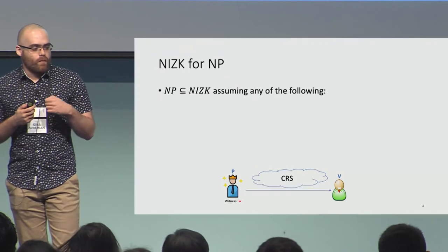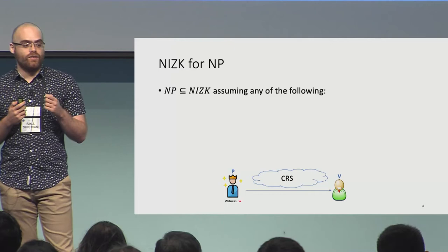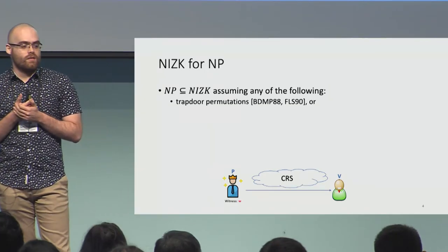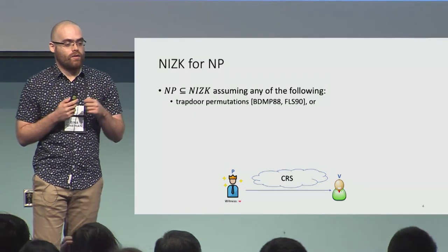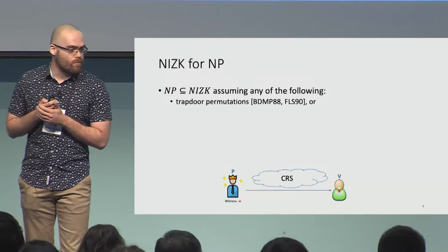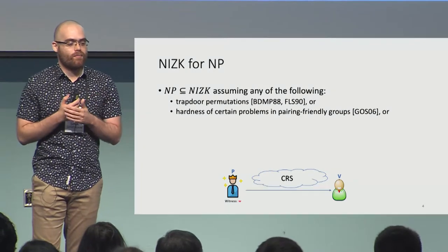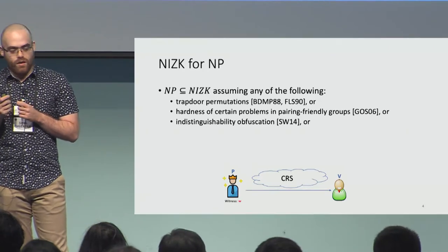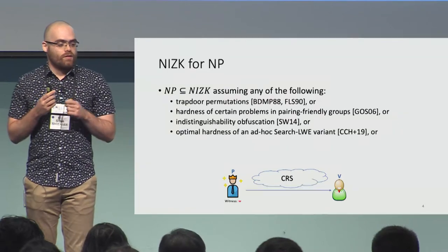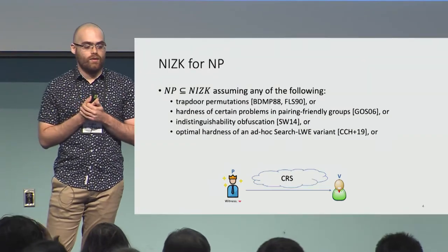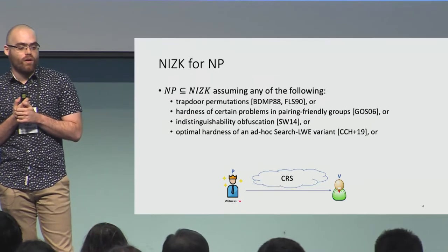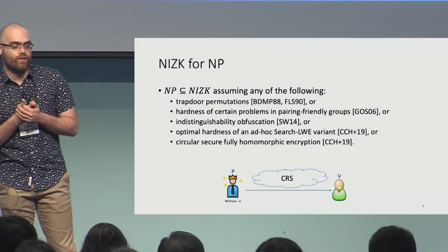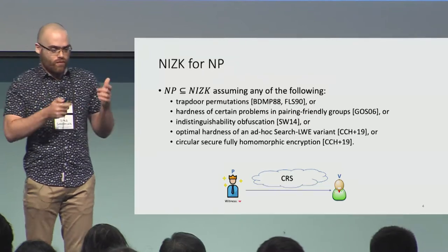We have many constructions of NIZK systems for all NP languages based on different assumptions. The first is trapdoor permutations, by the BDMP and Feige-Lapidot-Shamir works. The second is hardness of certain problems in pairing-friendly groups, by Groth, Ostrovsky, and Sahai. The third is indistinguishability obfuscation, by Sahai-Waters. The fourth is optimal hardness of an ad hoc variant of search LWE, by Canetti, Chen, Holmgren, Lombardi, Rothblum, and Vaikuntanathan. The last, most related to this work, is circular secure fully homomorphic encryption, by the CCH+19 work.